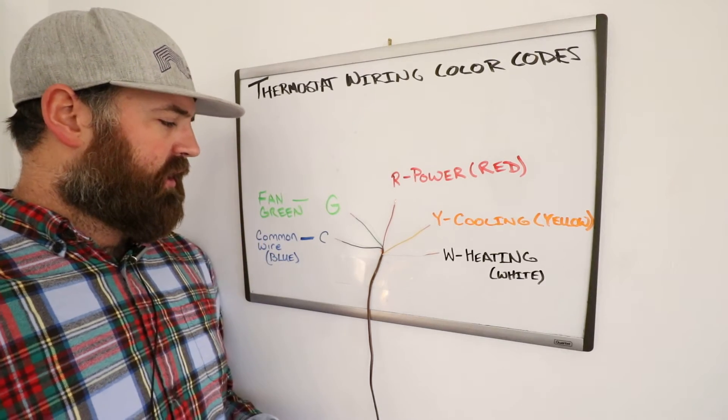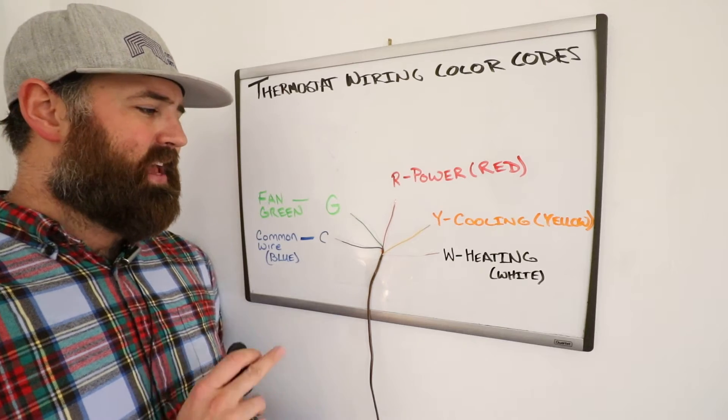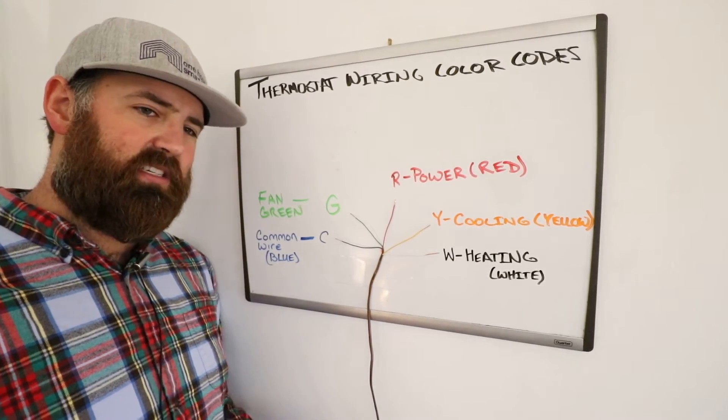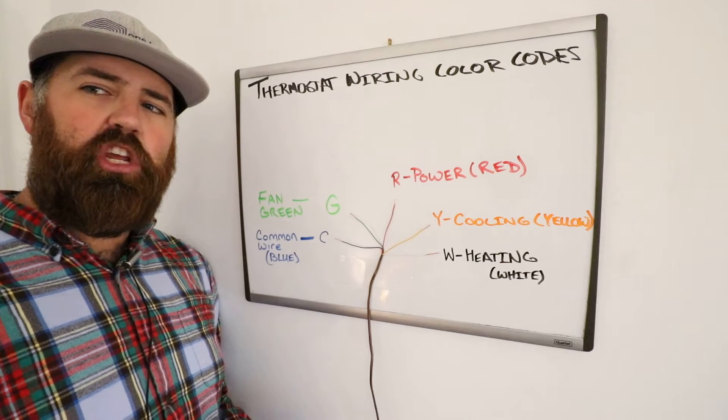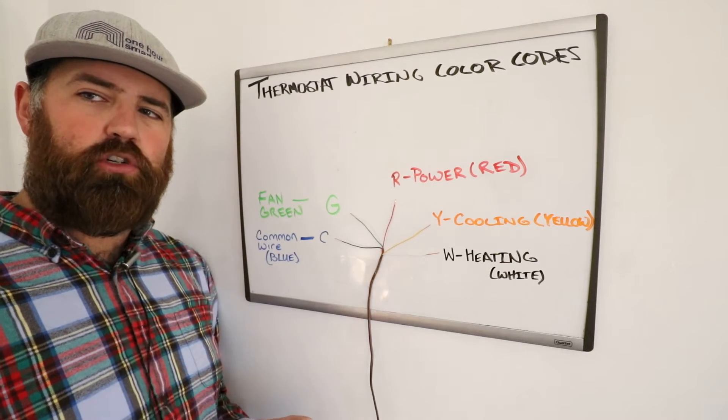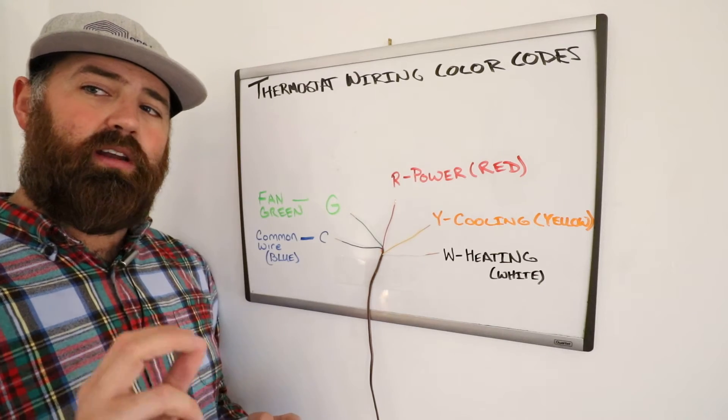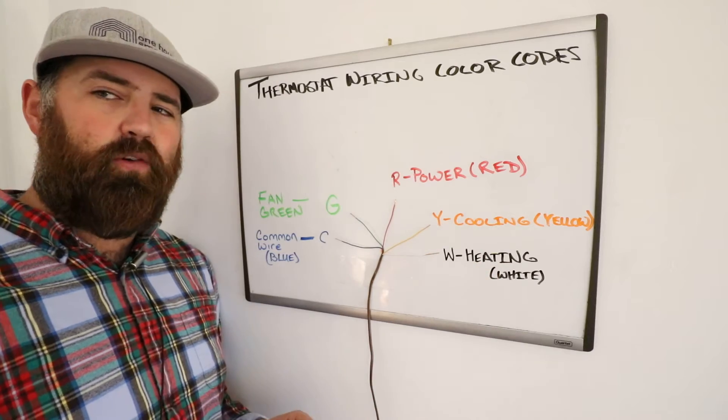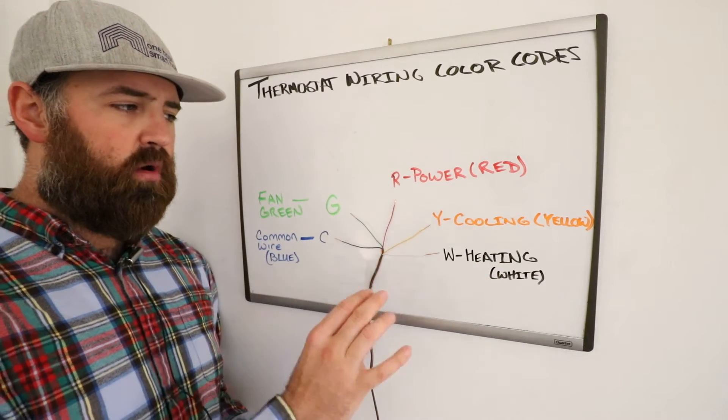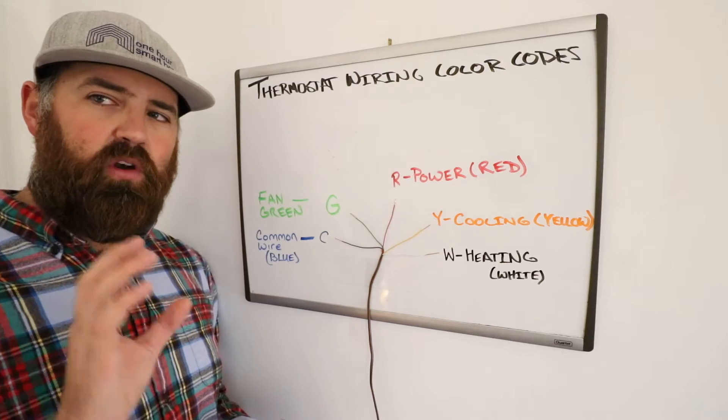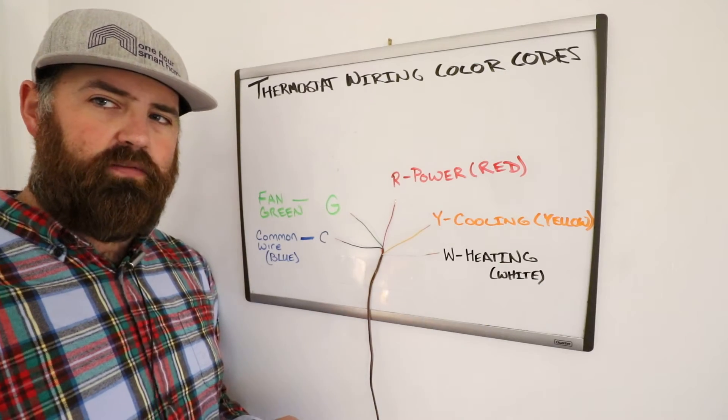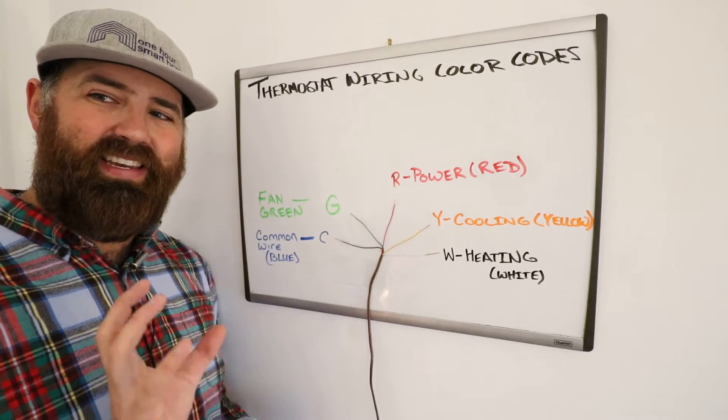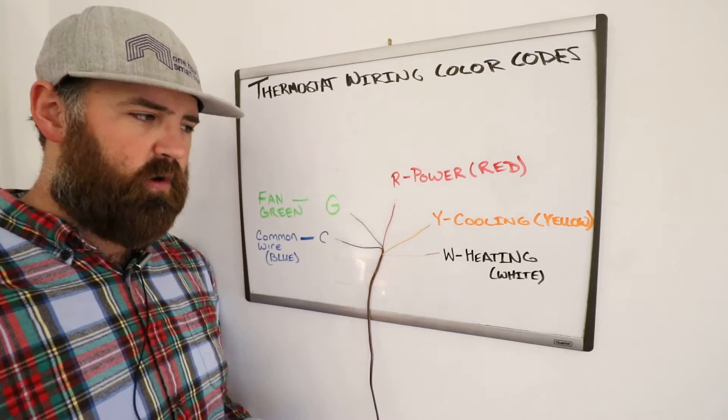The G-wire is the fan or green wire, and that actually isn't required for most HVAC systems, but most have it. What the G-wire does is allow you to control your fan to turn it on or off whenever you want, regardless if you have heating or cooling going. Normally, when you activate cooling or heating, it's going to automatically turn on your fan no matter what if you don't have a G-wire because your HVAC system knows that it needs to circulate air in order for it to work.